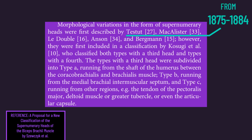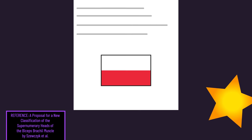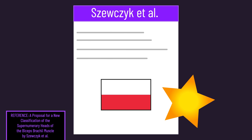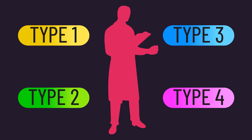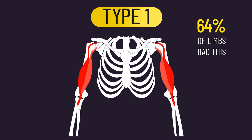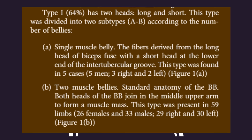Texts dating back as early as the 1800s seem to have noted the existence of supernumerary heads. One of the best analyses comes from a 2022 study from Poland. 101 upper limbs were analyzed, and the researchers classified the morphology of the biceps into four different types. 64% of the upper limbs fell into type 1 — the traditional view of the biceps consisting of a long and short head — though with two subtypes differing in how the heads fused together.